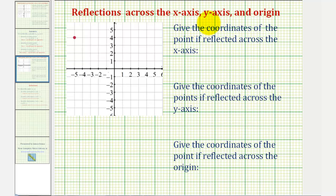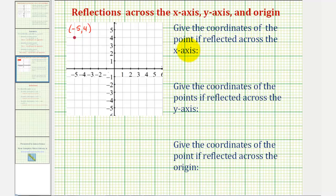We're given a point on the coordinate plane. The given red point has coordinates negative five comma four. We're asked to give the coordinates of the point if reflected across the x-axis, then if reflected across the y-axis, then if reflected across the origin.